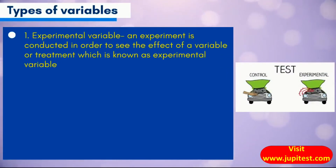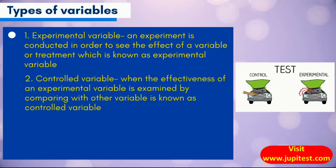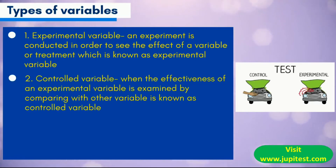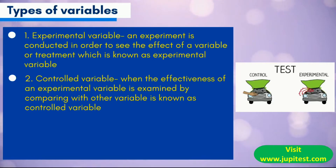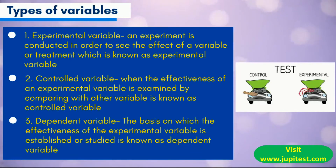First, the experimental variable: an experiment is conducted in order to see the effect of a variable or treatment, which is known as the experimental variable. Second, the controlled variable: when the effectiveness of an experimental variable is examined by comparing it with another variable, that is known as the controlled variable. Third, the dependent variable: the basis on which the effectiveness of the experimental variable is established or studied is known as the dependent variable.